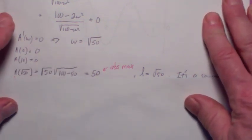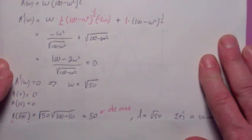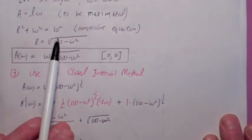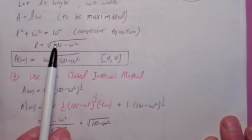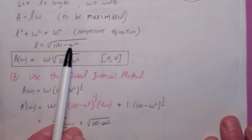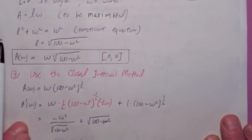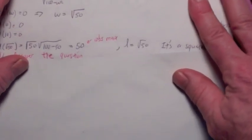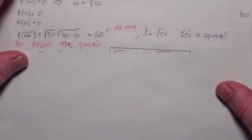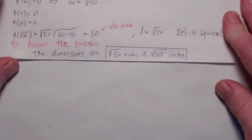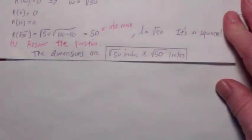A of √50 is going to be your absolute max. Notice if W equals √50, what is L? L is the square root of 100 minus 50, which is √50. So what we just showed here is that L equals W. So it is a square. The dimensions are √50 inches by √50 inches.